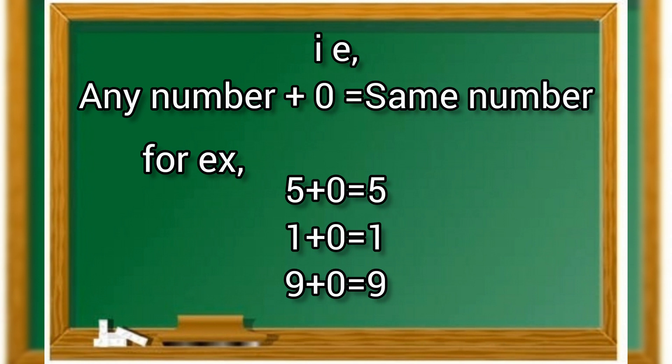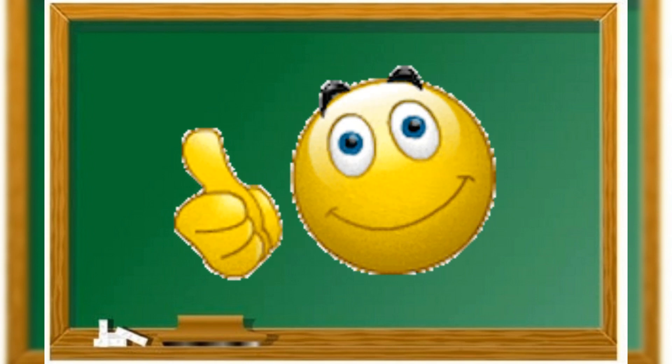That is, any number added to 0 results in the same number. For example, 5 plus 0 is equal to 5, 1 plus 0 is equal to 1, 9 plus 0 is equal to 9. Hope you like the video.